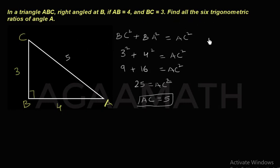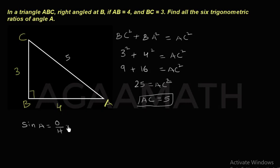Now it is very easy for us to find all six trigonometric ratios. Let me find the six trigonometric ratios of angle A. First of all, sine A — the ratio of sine A is opposite by hypotenuse. The opposite side of angle A is 3, and the hypotenuse is 5, so sine A equals 3 by 5.